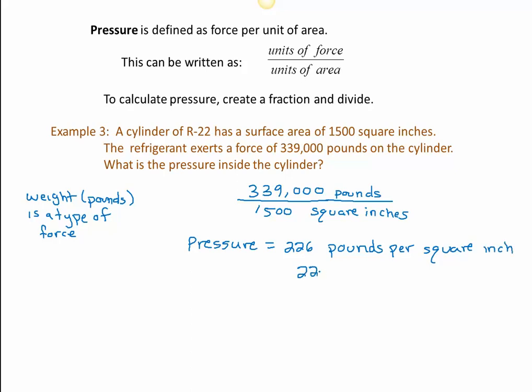So this pressure is 226 pounds per square inch. Or you might see it, of course, as 226 PSI. Okay, so that's what per is. Per talks about a division. Units before the per are divided by the units after the per.